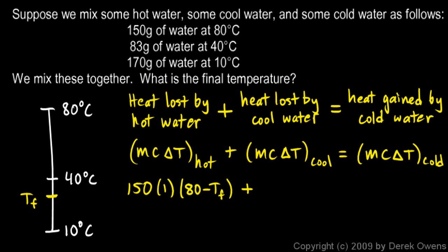Plus mc delta t for the cool water. The cool water starts at 40 and cools down to Tf, so the delta t for the cool water will be 40 minus Tf. Let's put this in. The mass for the cool water is 83 grams. So it's 83 times 1 times the change in temperature, which we said was 40 minus Tf. That's that distance on our temperature scale.